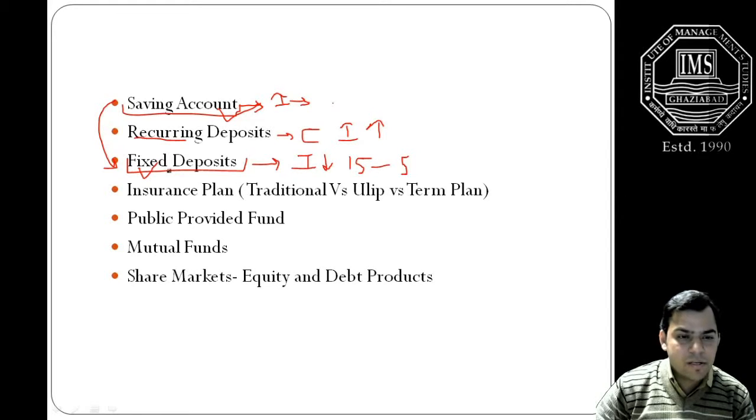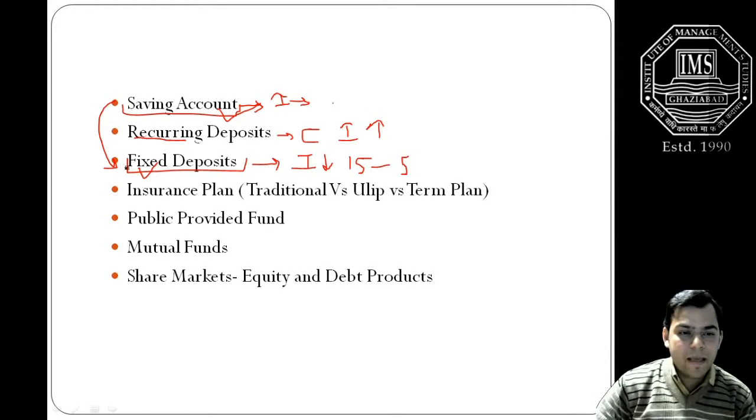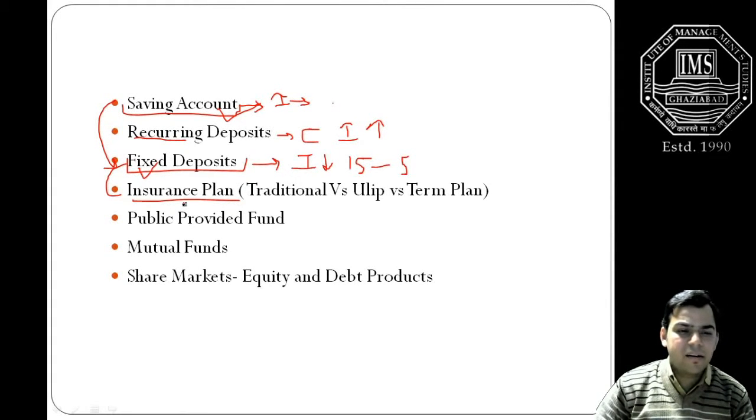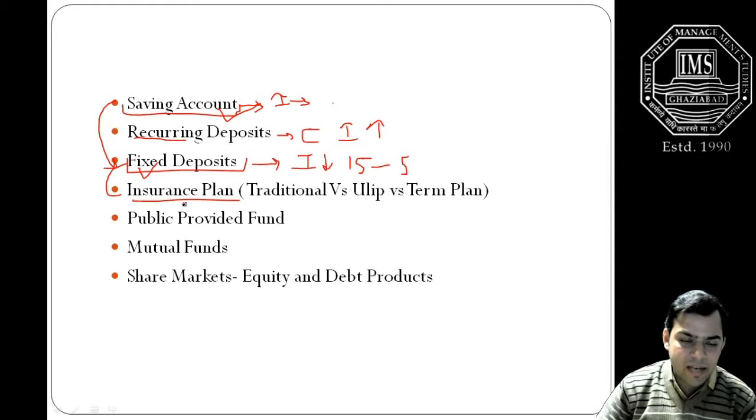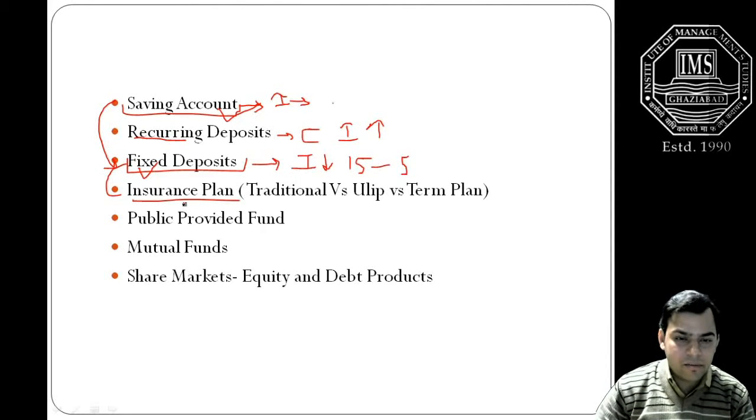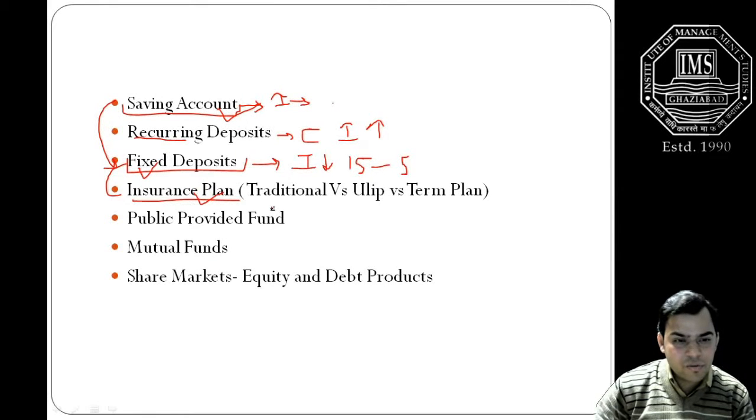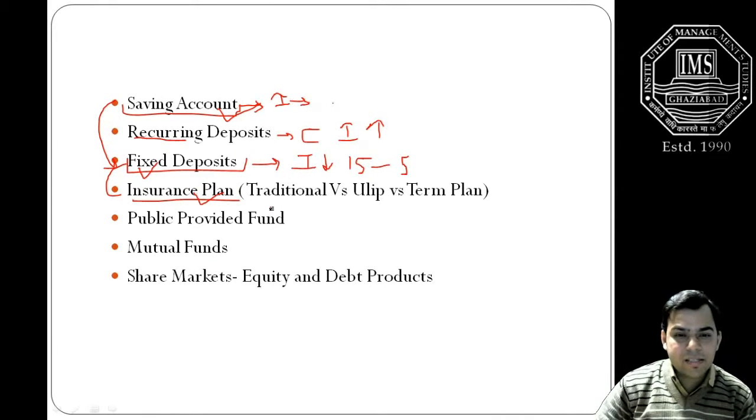But this is the reality that still people have a lot of trust and faith in fixed deposits because they are ensured that principal amount will remain the same. Fourth important component which we are going to discuss is the insurance plan. Each and every individual, whether they belong to good financial background or from a lower kind of financial background, should have insurance plans.